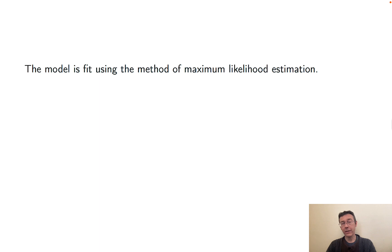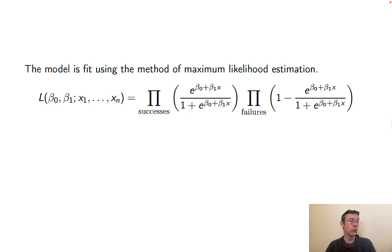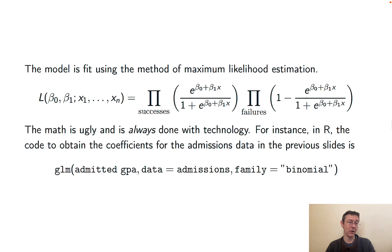You have to fit the model that I showed on the previous slide using maximum likelihood estimation, and that can be a bit of a bear. Essentially, what you're doing is writing the joint probability function for the data that you have with unknown parameters beta 0 and beta 1, and then considering it as a function of those unknown parameters beta 0 and beta 1. You differentiate with respect to beta 0 and beta 1, typically after taking a logarithm, set those equal to 0, optimize using multivariable calculus.